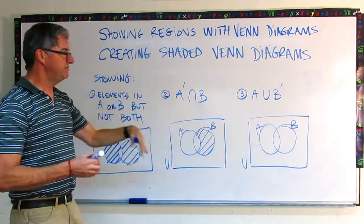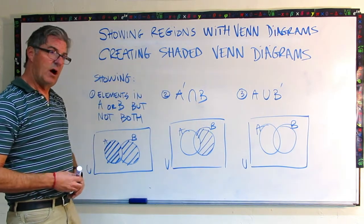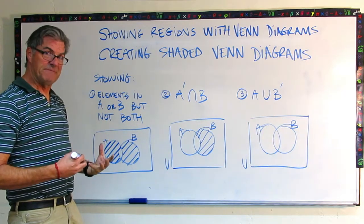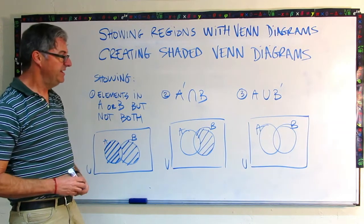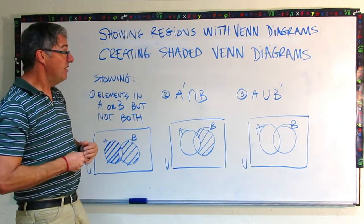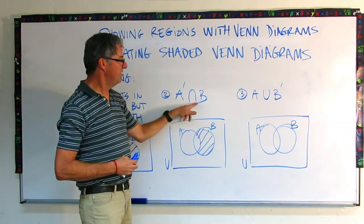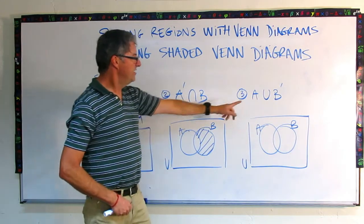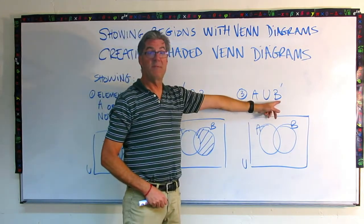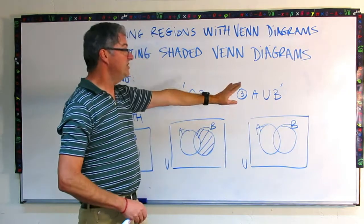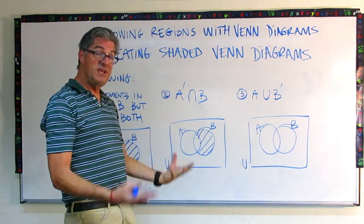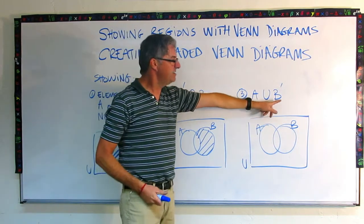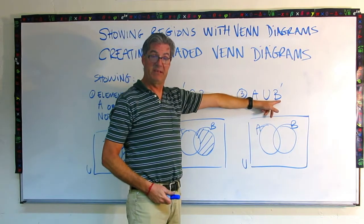Now this last one is the hardest of these three. If you're feeling bold, pause the video, see what you get. So now instead of an intersection like this one, we have union. And then instead of the complement of A, we just have A and we have the complement of B. So this is the union. So it's the combination, the adding together of A and the complement of B.